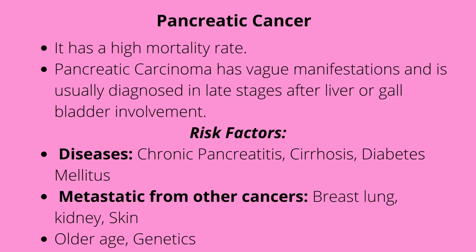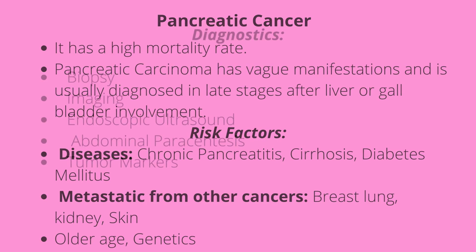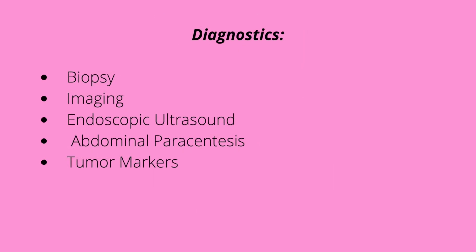For diagnostics, we can do our biopsy — our gold standard. With imaging, we can do endoscopy and abdominal paracentesis. That's when they use a needle inserted into the abdomen to remove fluid to check what fluid you're getting when you have ascites. We can also check for tumor markers.